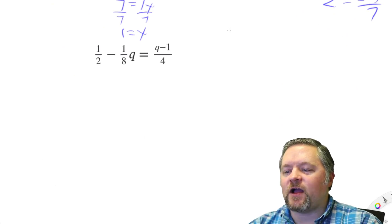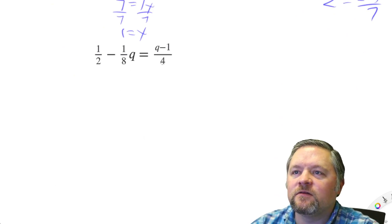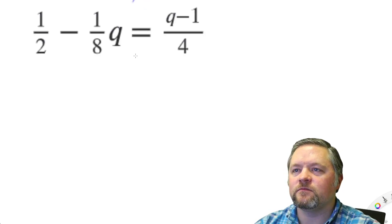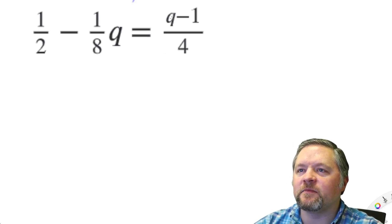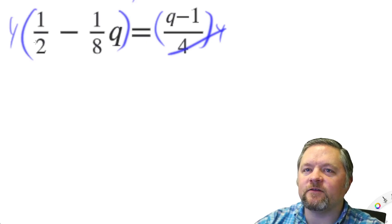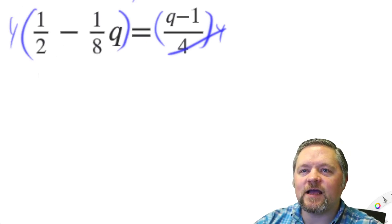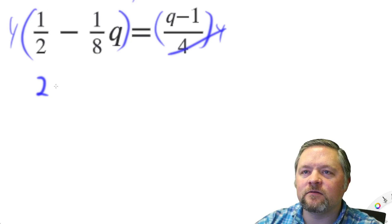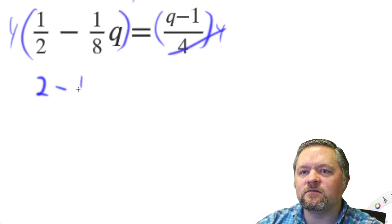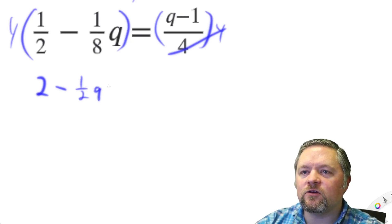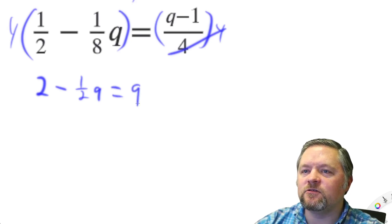Fractions, fractions, fractions galore. Okay. Everything over here is being divided by 4, so why don't we start out by multiplying by 4? If I multiply that by 4, those will cancel, which means I have to multiply this side by 4. 4 times 1 half is 2. So 4 times 1 eighth is 1 half q equals... Those cancel. Q minus 1.